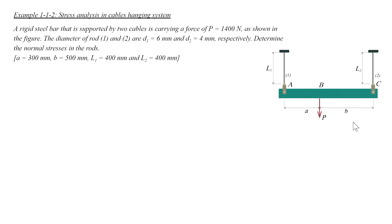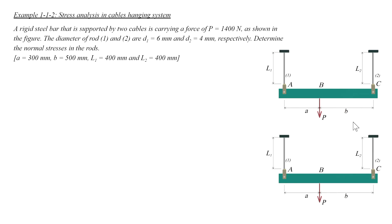The second example is a rigid steel bar supported by two cables and carrying a force P. The diameter and length of the cables are provided, and we want to determine the stress in the cables. Similar to the previous problem, the first step is determining the internal force in each cable using the free body diagram — we cut cable 1 and 2 and put unknown forces F1 and F2.